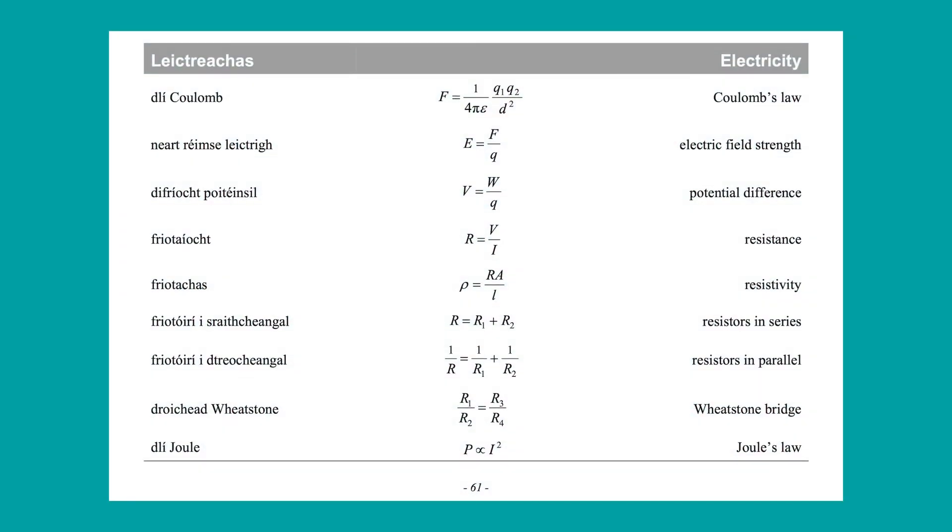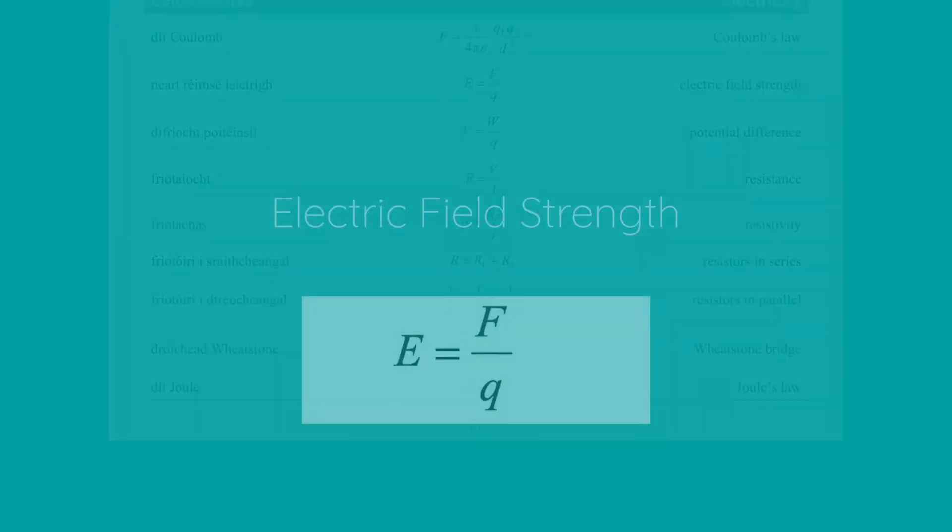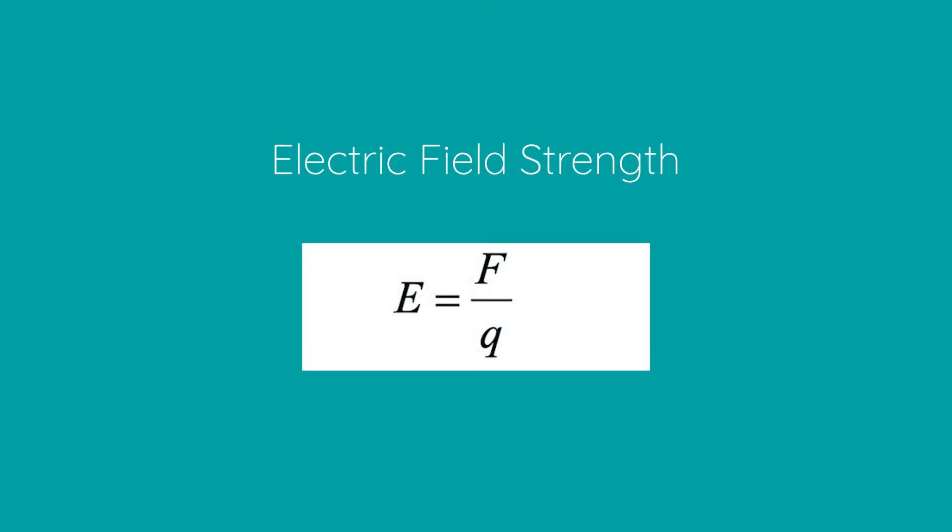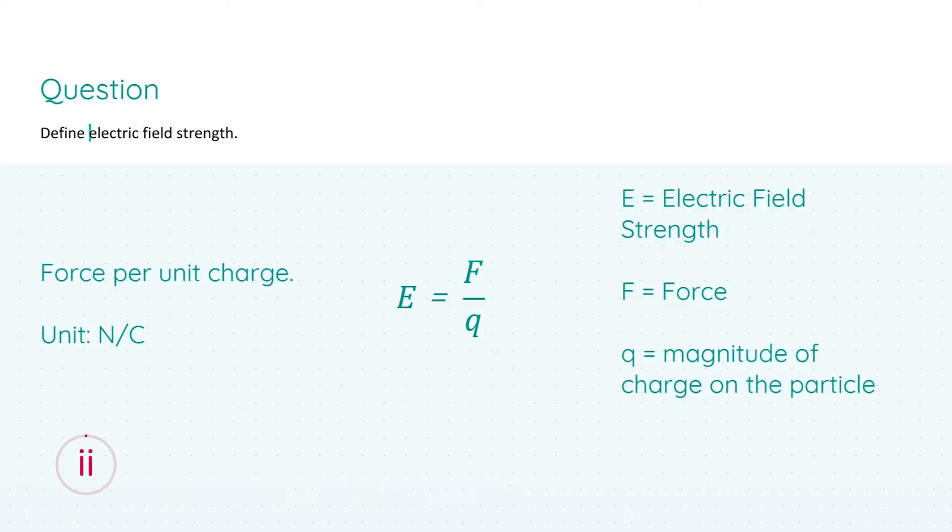And again for part two, I'm going to draw your attention to page 61 of the forming tables book where we're going to look at electric field strength in particular. In part two we're asked to define electric field strength. Now you can either give the verbal or the mathematical notation like in part one. I'm going to first give you the verbal notation, which is just that electric field strength is the force, which will get you three marks, per unit charge, which will get you the next three marks.